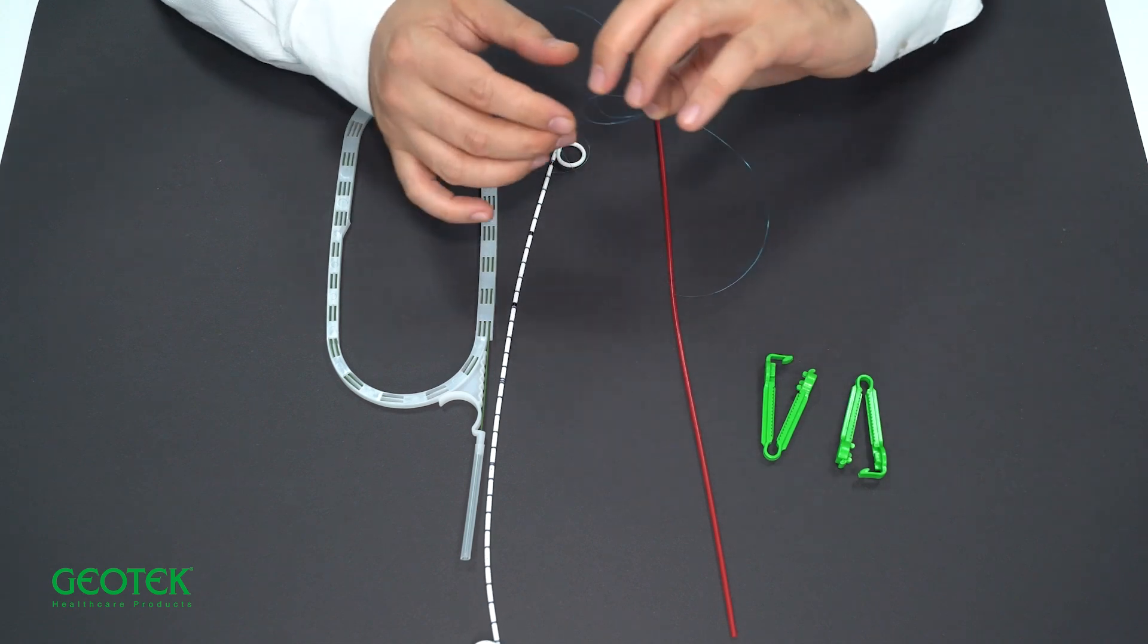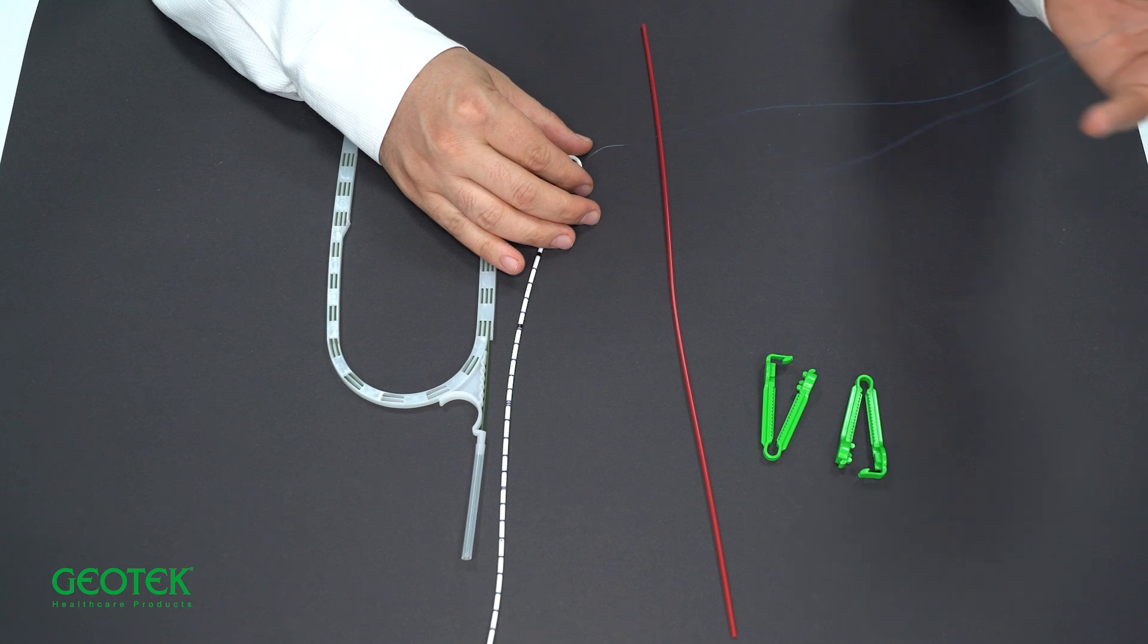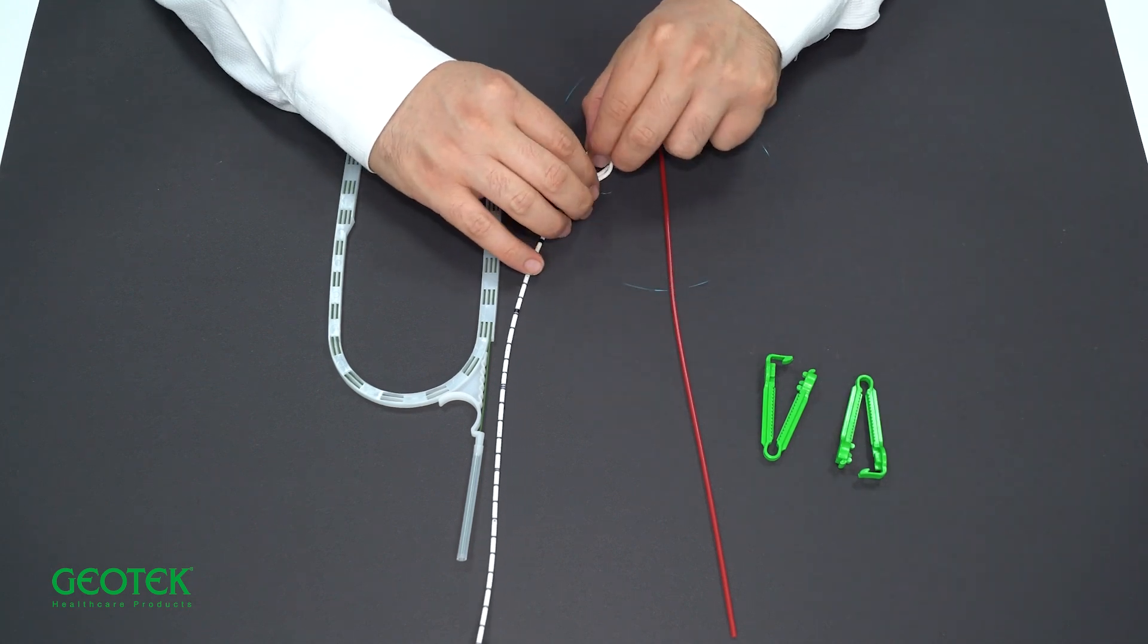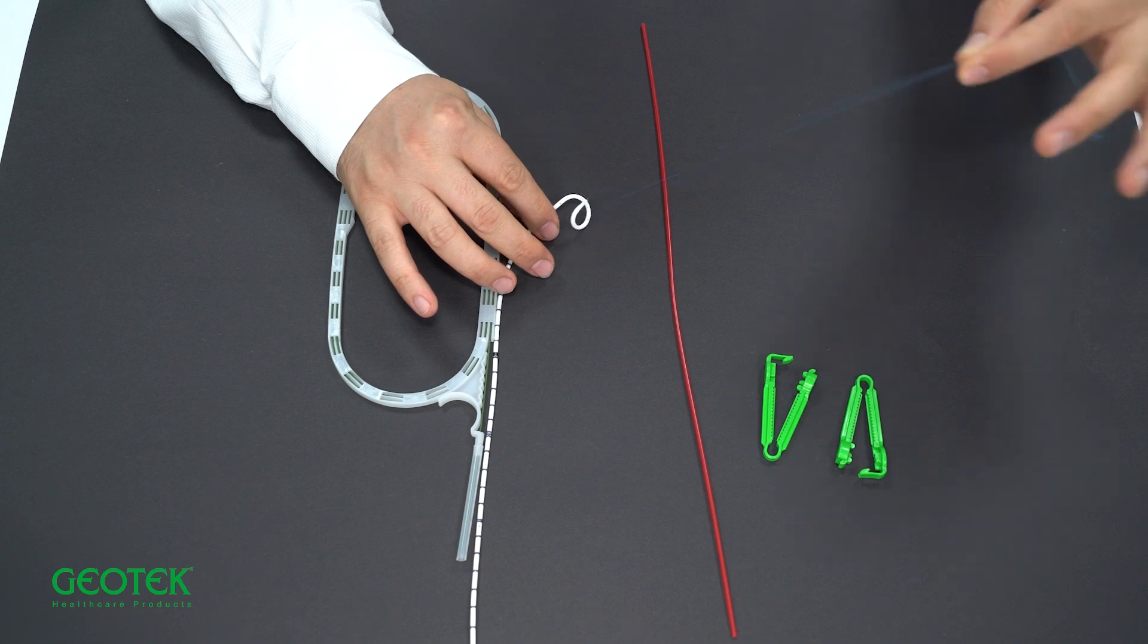In open surgery, the fixation sutures at this end are usually used to connect the stent to a urethral catheter. If open surgery is to be performed, this can be used for fixation.